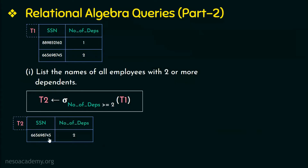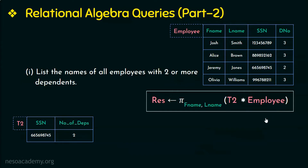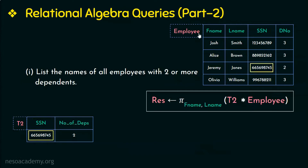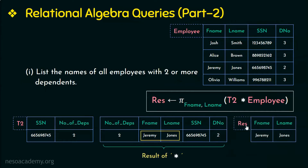Now we have the SSN of the employee having two or more dependents, but we are asked to list only the names of those employees. The names are present only in the employee relation, so we join T2 with the employee relation using a natural join. The join attribute is SSN, and since it has the same name in both relations we can directly perform the natural join. There is only one SSN that matches, so that tuple is the result. We project only the first name and last name, giving us Jeremy Jones as the only employee with two or more dependents.